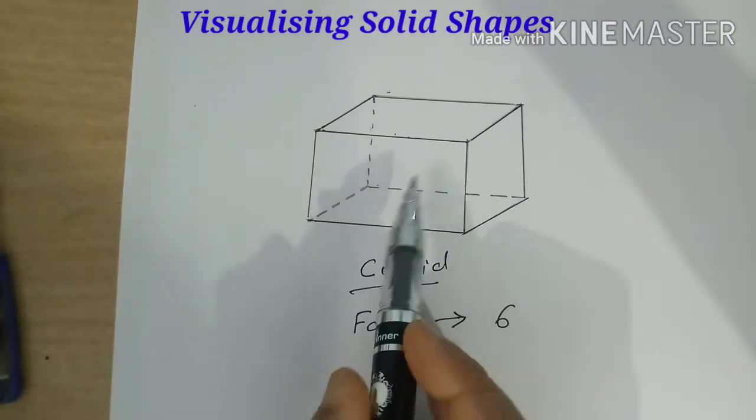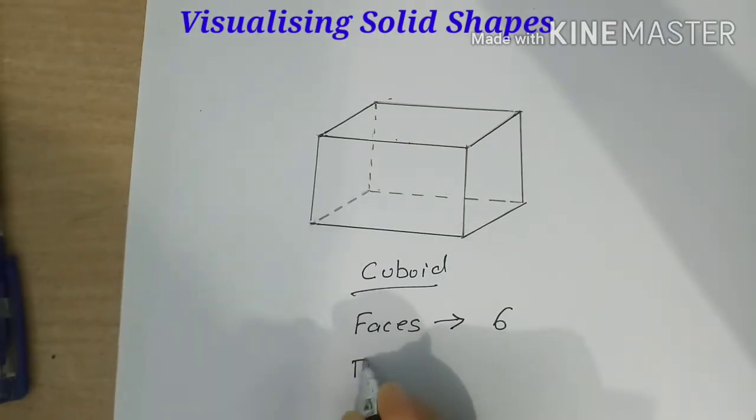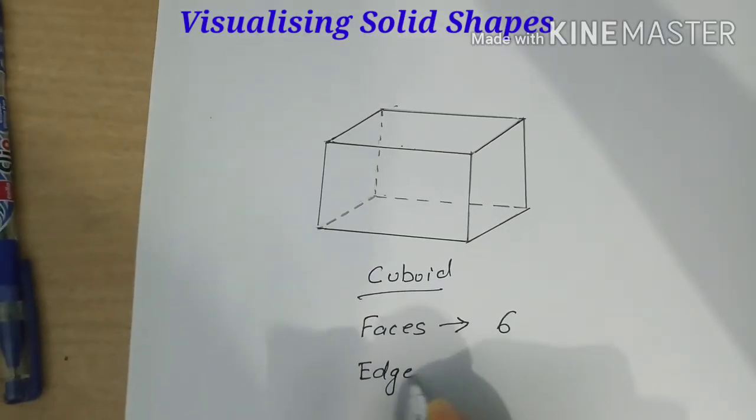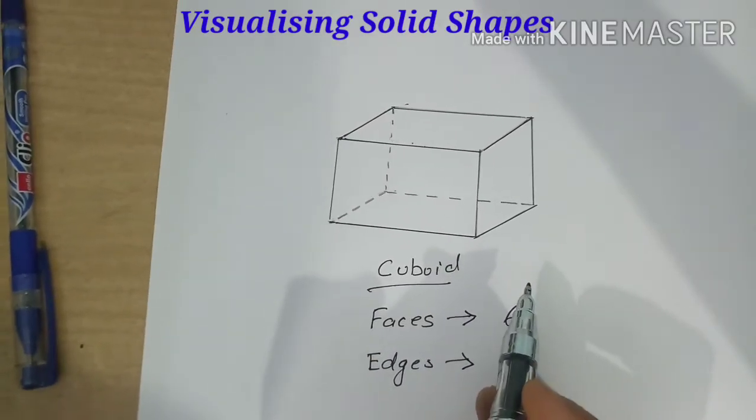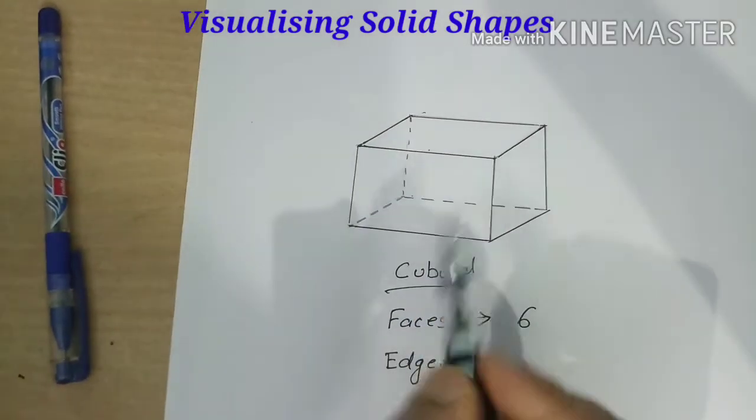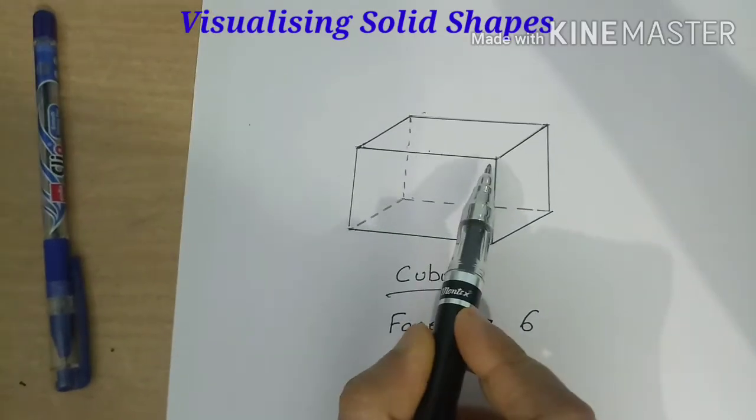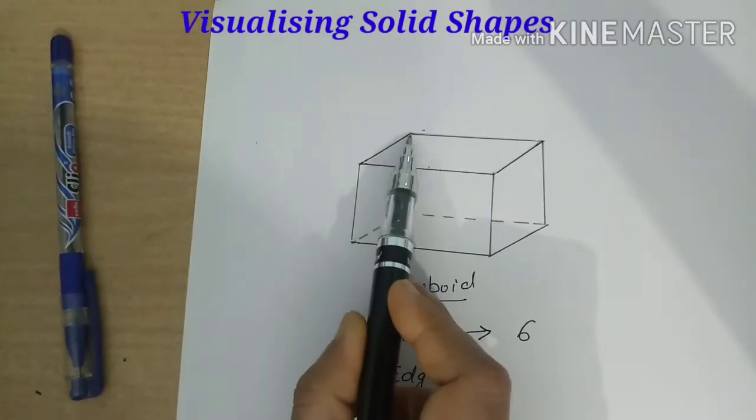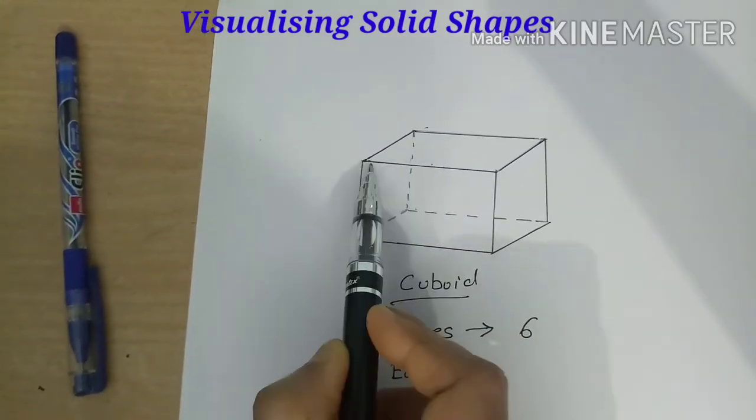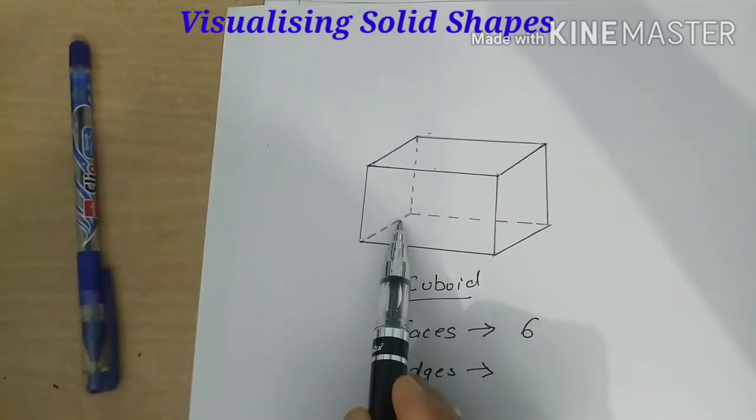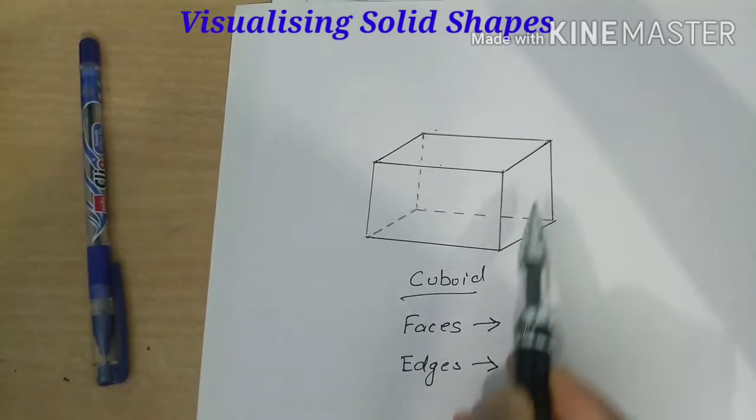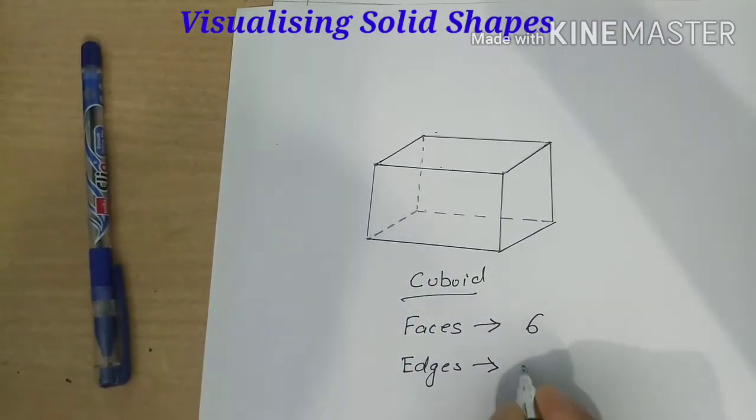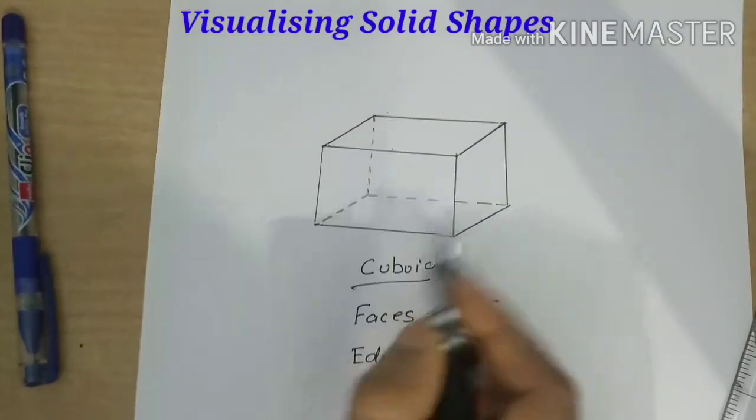Next we are going to count the number of edges. Edges are where faces meet. Edges are those lines where faces meet. So here is one line, second, third, fourth, fifth, sixth, seventh, eighth, ninth, tenth, eleven and twelve. So total twelve edges are there in a cuboid.